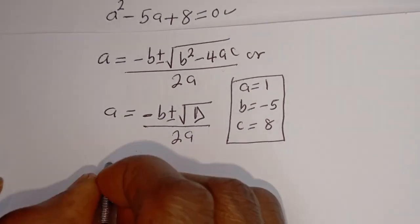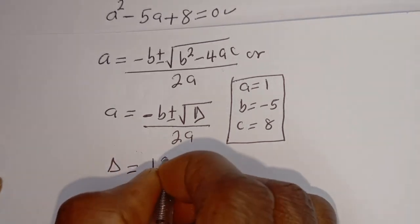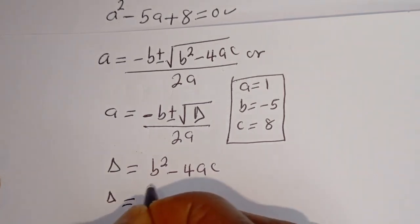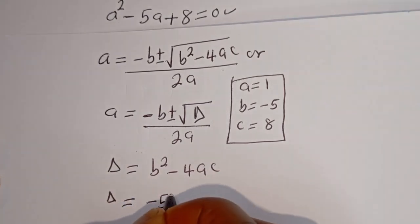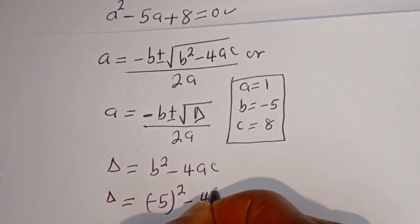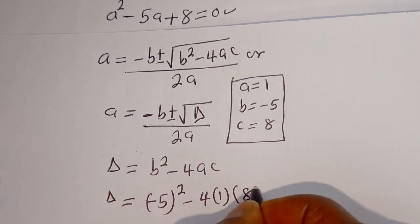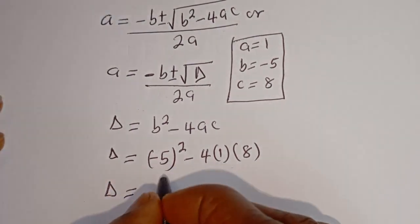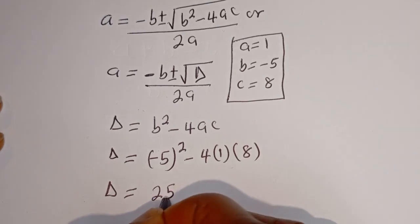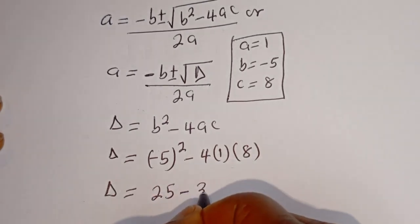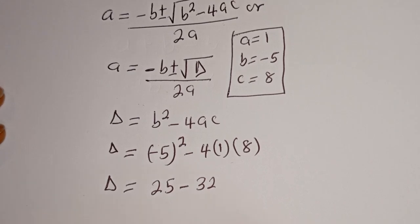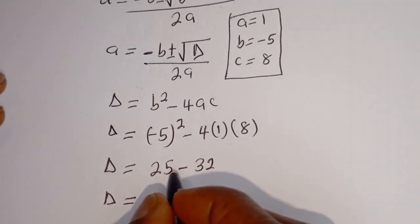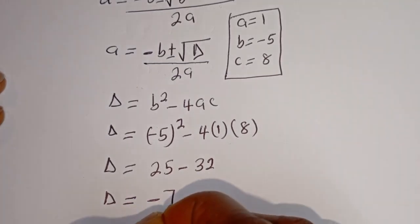Then we have the discriminant D, where D is equal to B squared minus 4AC. So D is equal to minus 5 squared minus 4 multiplied by 1 multiplied by 8. Minus 5 squared is 25, and 4 times 1 times 8 is 32. Therefore the discriminant D is equal to 25 minus 32, which is minus 7.